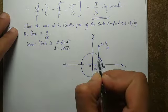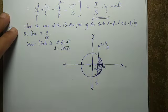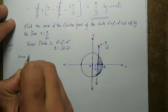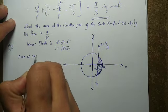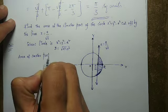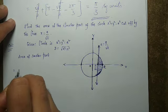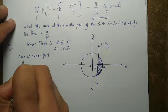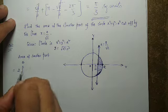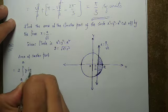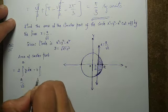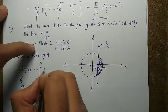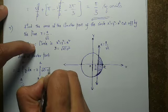Two times that first-quadrant area gives the shaded smaller part. So the area of the smaller part equals 2 × ∫[a/√2 to a] √(a² − x²) dx.